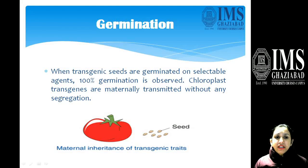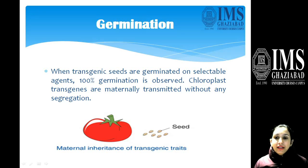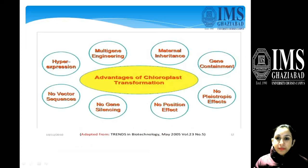Next, we germinate the seeds. Transgenic seeds germinated on selectable agents show 100% germination, which is a quite important feature, and these traits are maternally transmitted.